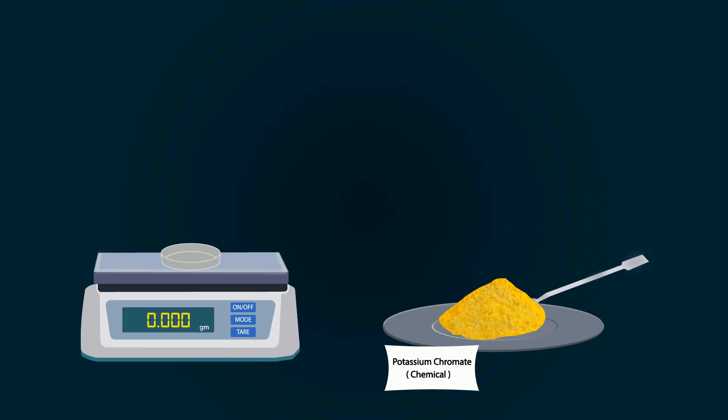You can put potassium chromate into the petri dish with the help of a spatula. Weigh precisely up to 5 grams.